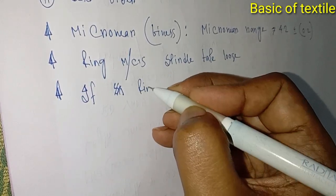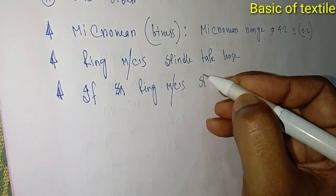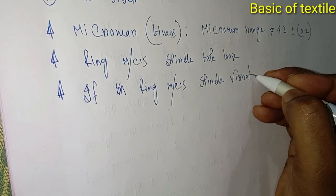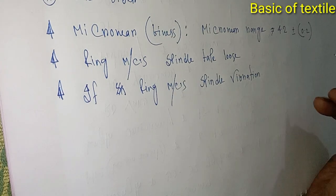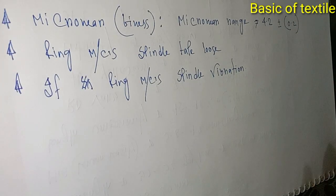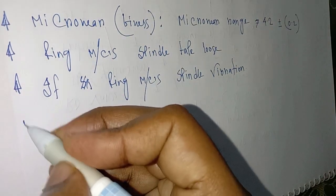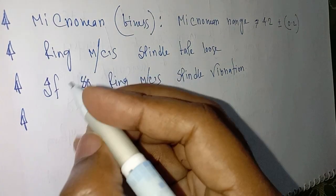In ring machines, spindle vibration is important. If ring machine spindle vibration is too high, the cops will create yarn hairiness and damage, resulting in high short fiber mixing.